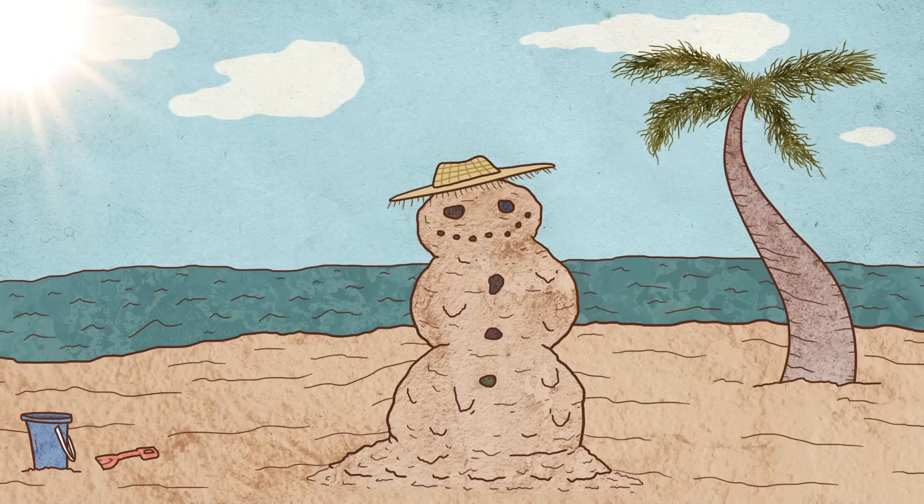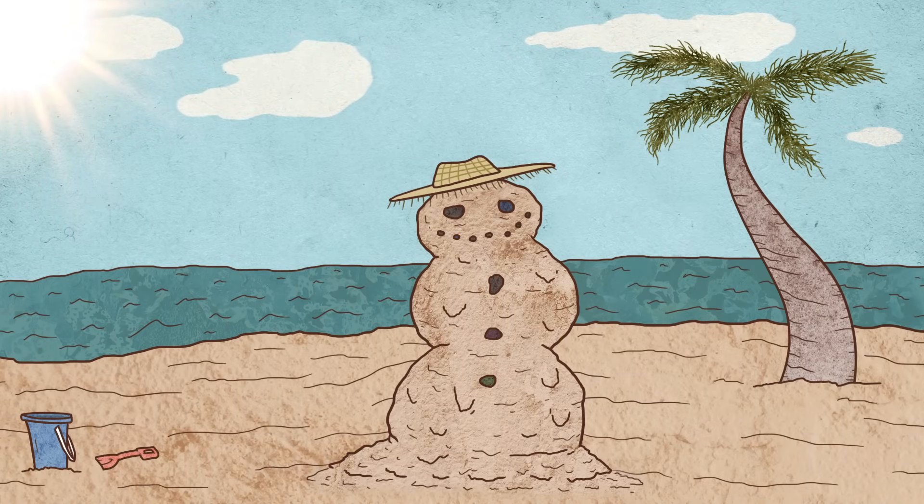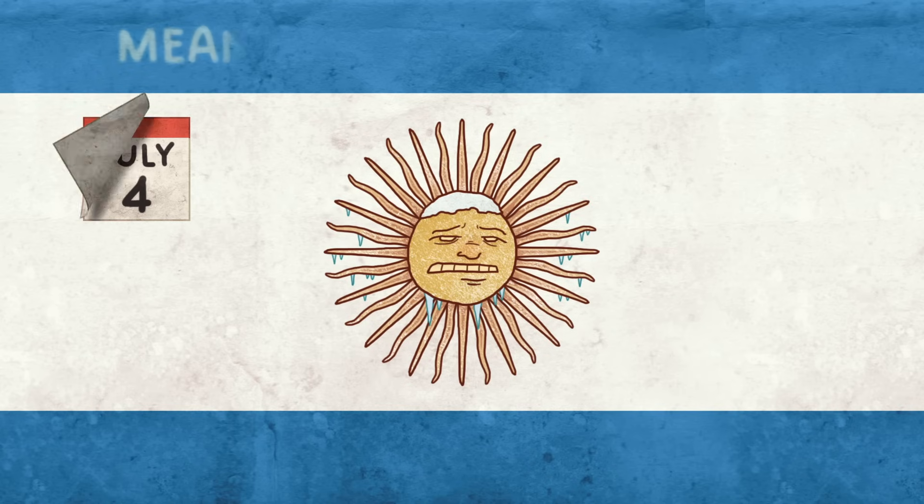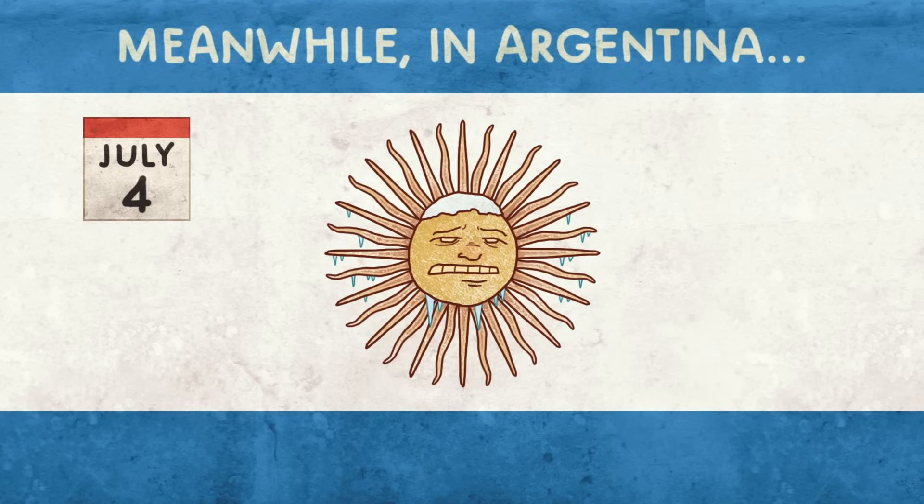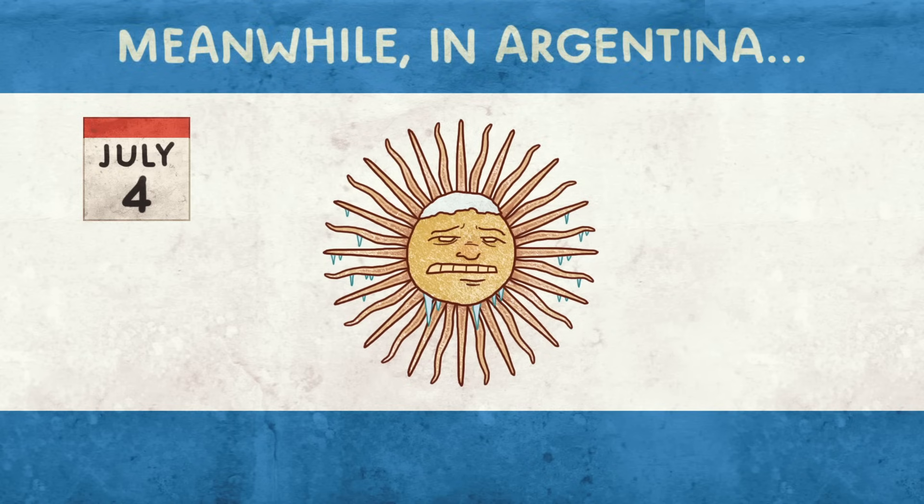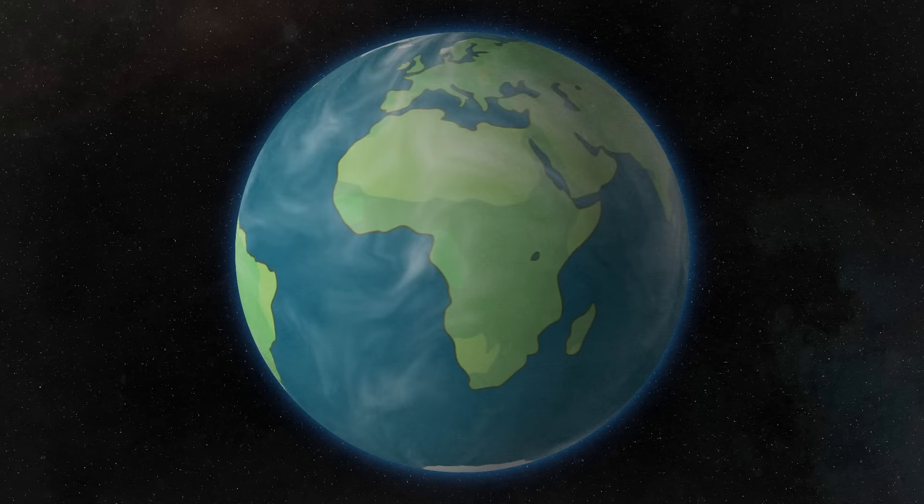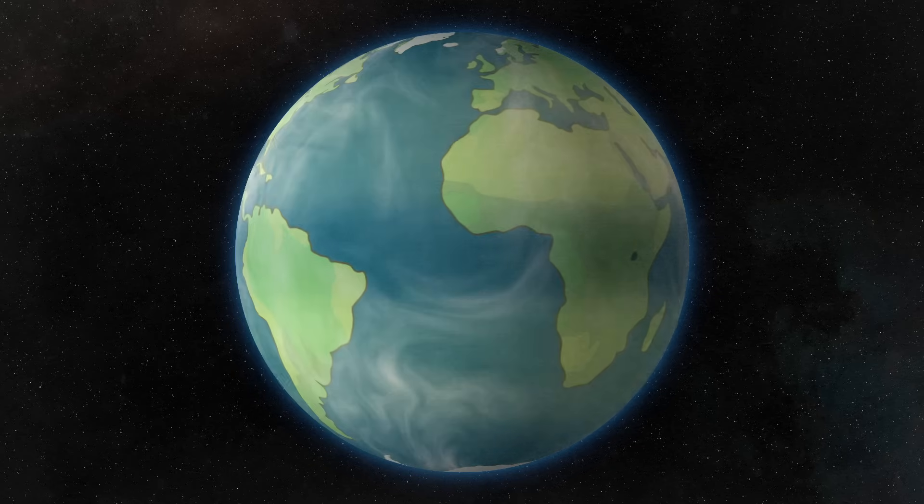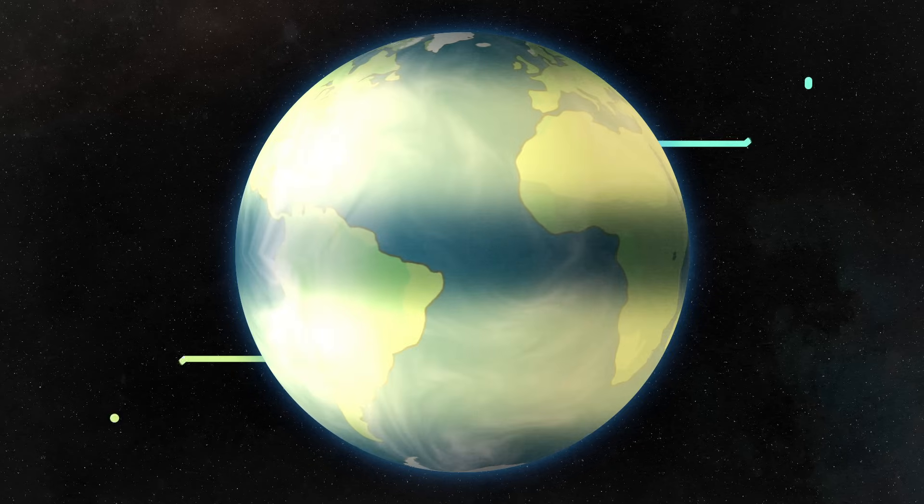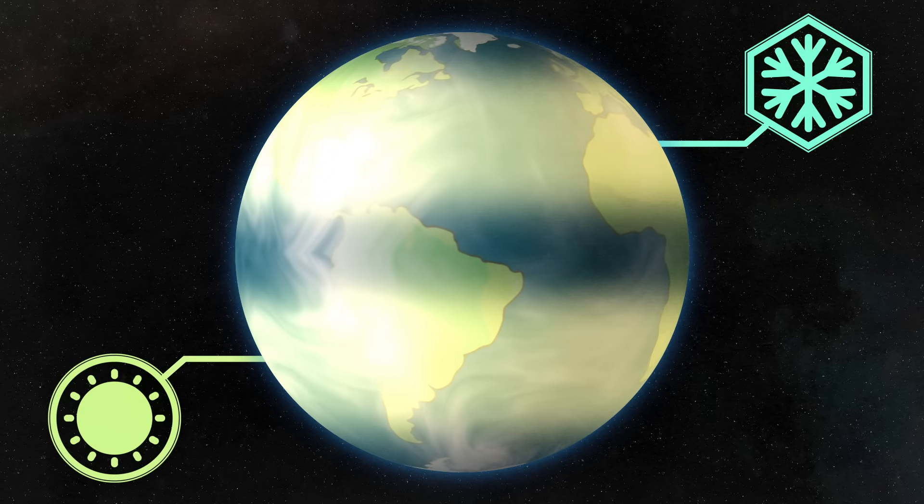If you had told me back then that one-third of Earth's population had never seen snow, or that July 4th was most definitely not a beach day, I would have thought you were crazy. But in reality, seasonal change with four distinct seasons only happens in two regions on the planet. And even in those two, the seasons are reversed. But why?